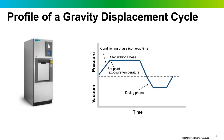In a gravity displacement sterilizer, incoming steam displaces air through a drain near the bottom of the sterilizer during the conditioning phase. When the temperature sensor at the drain reaches the preselected cycle temperature, the drain closes and the exposure phase begins. The cycle finishes with a drying phase. In contrast, a pre-vacuum cycle uses mechanical vacuum to remove air — a series of steam injections followed by vacuum pulls below atmospheric pressure — before the exposure phase, followed by a drying phase.